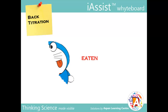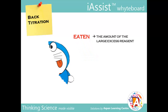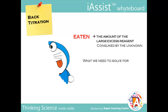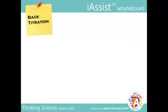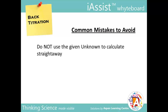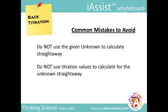Finally, the eaten portion refers to the amount of the large excess reagent consumed by the unknown, which is eventually what we need to solve for in the question. At this point, if you are clear on how this works, you should know to avoid three common mistakes. Firstly, do not start calculating with the very first value given in the question, which is usually the unknown itself. Secondly, do not use values from the titration itself to straight away calculate the unknown — remember, the titration is for the leftovers and not the unknown. And lastly, do not forget to account for any aliquoting that is being done in the question.